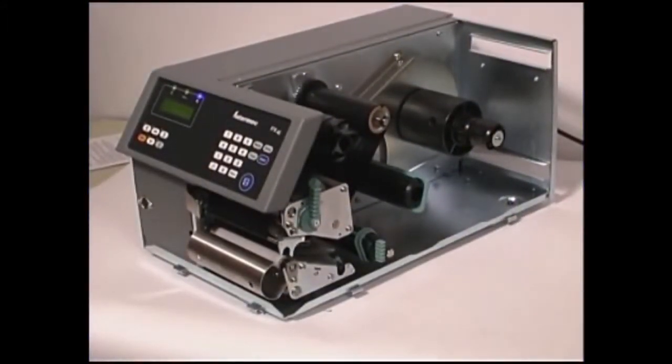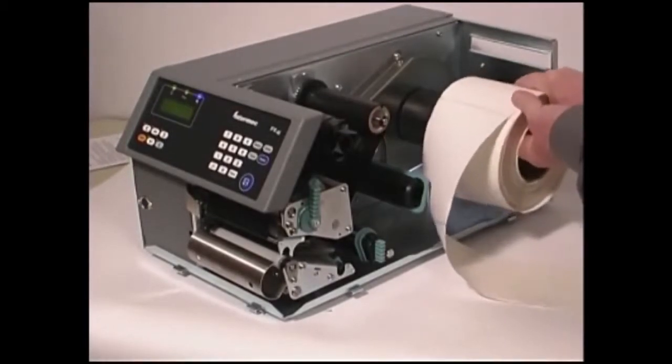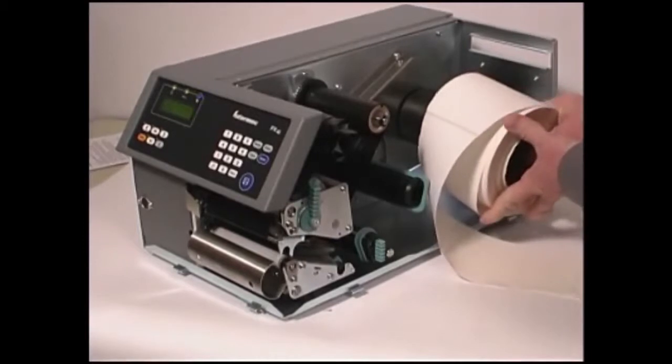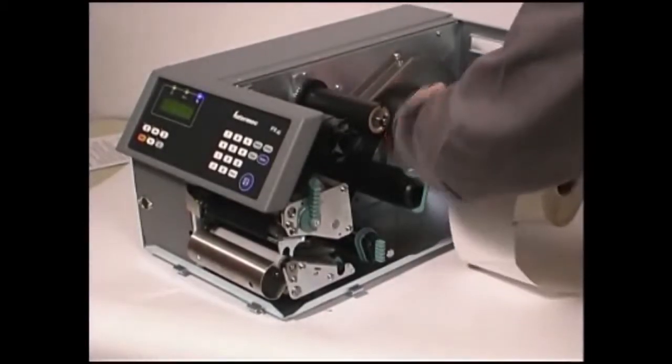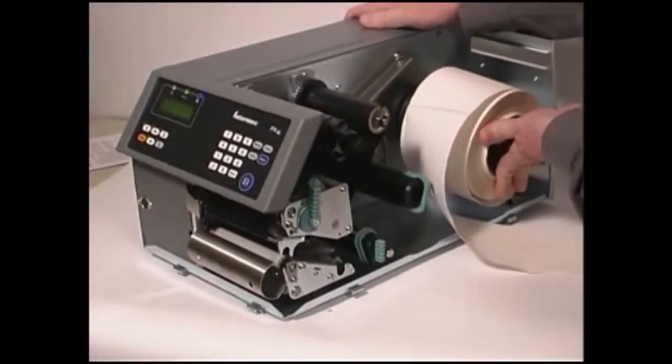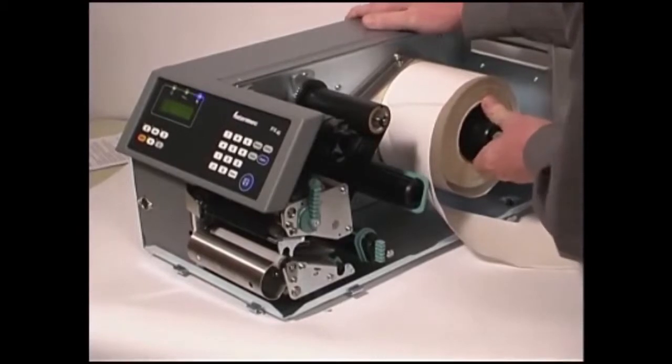If you are using a media roll with a 76-millimeter, 3-inch core, install a 3-inch adapter on the media supply hub before placing the media on the hub. Instructions for installing the adapter can be found in the printer's user's guide, which can be downloaded from the Intermec website. Otherwise, just fit a new roll of media on the supply post and push the roll in as far as it will go.